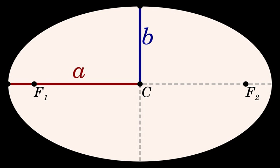It is often said that the semi-major axis is the «average» distance between the primary focus of the ellipse and the orbiting body. This is not quite accurate, because it depends on what the average is taken over. Averaging the distance over the eccentric anomaly indeed results in the semi-major axis. Averaging over the true anomaly results, oddly enough, in the semi-minor axis b√(1 − e²).